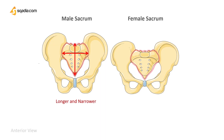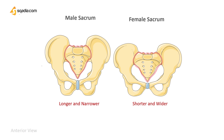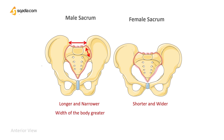The male sacrum is longer and narrower compared to the female. The width of the body of the first sacral vertebra is greater than that of each ala in the male. In the female, the two are equal.